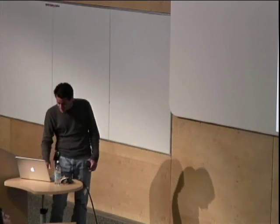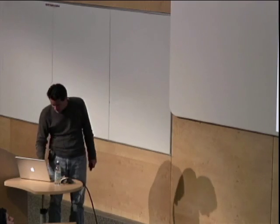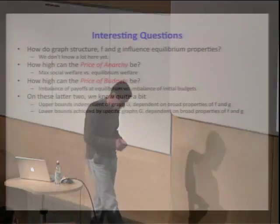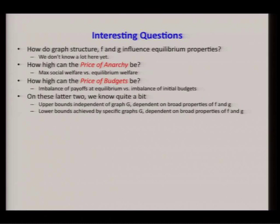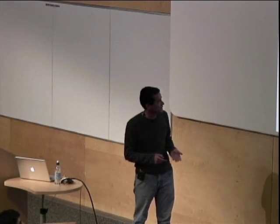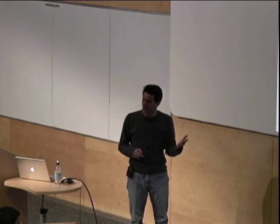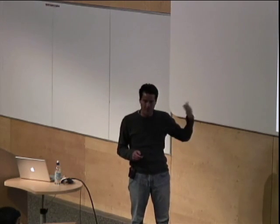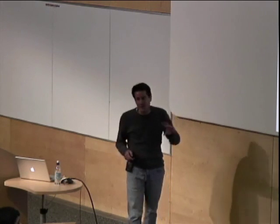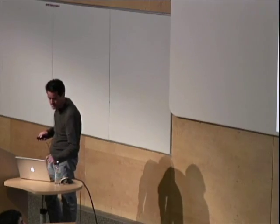For these two broad properties of equilibria, we know quite a bit. I'll describe results giving upper bounds for these two quantities that are independent of the underlying graph and depend only on certain broad properties of F and G. And in other cases, lower bounds showing that the price of anarchy or the price of budgets can be large for specific graphs, again dependent on relatively broad properties of F and G.